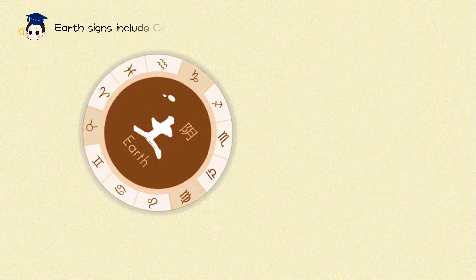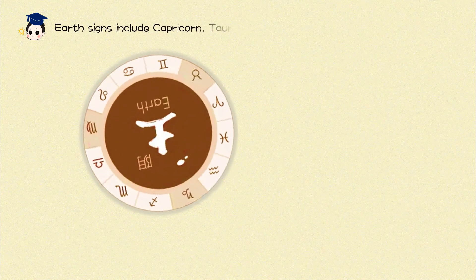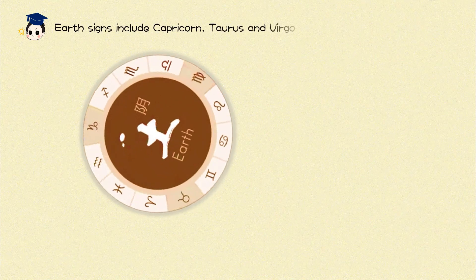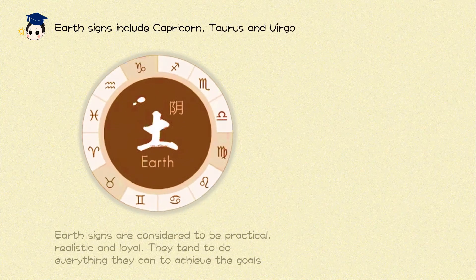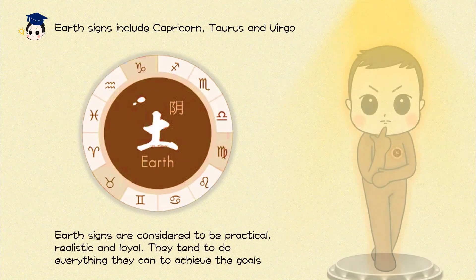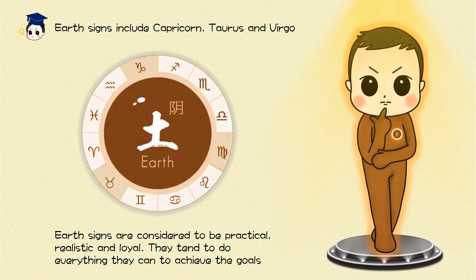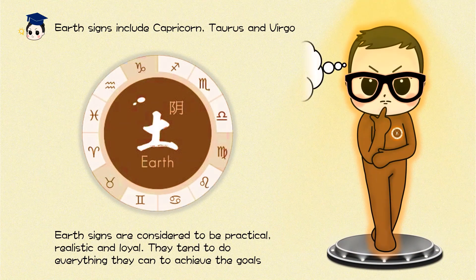Earth signs include Capricorn, Taurus, and Virgo. Earth signs are considered to be practical, realistic, and loyal. They tend to do everything they can to achieve their goals.